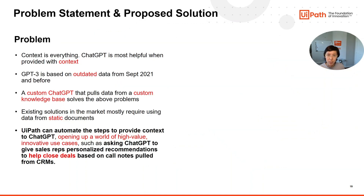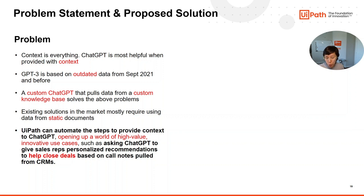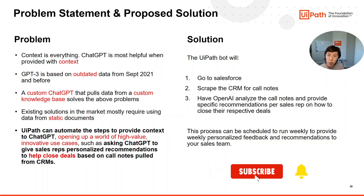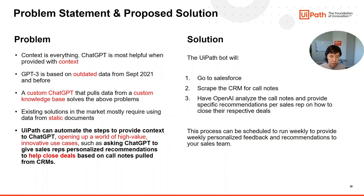UiPath can automate the steps to provide context to ChatGPT, opening up a world of high-value, innovative use cases — such as asking ChatGPT to give sales reps personalized recommendations to help close deals based on call notes pulled from CRMs, which is what I'm going to show today. The idea is to go to Salesforce, scrape the CRM for call notes, then have OpenAI analyze the call notes and provide specific recommendations per sales rep on how to close their respective deals.